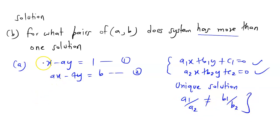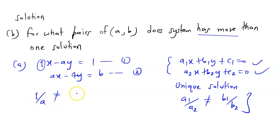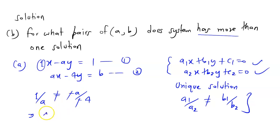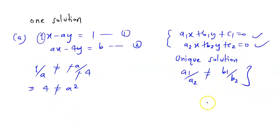Applying this to our equations: 1 divided by a is not equal to minus a divided by minus 4. The negatives cancel, giving a divided by 4. So 1 over a is not equal to a over 4, which means a squared is not equal to 4.